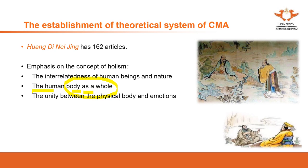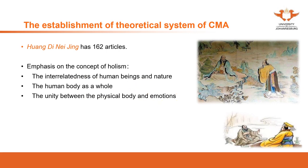The unity between the physical body and emotion: health is affected by emotion. Emotion is a kind of pathogen that can directly affect the internal organs. For example, when you feel depressed — say after a breakup — you may lose appetite and feel low. That shows how emotion can affect the physical body and its function. This emphasis was proposed by the Huangdi Neijing.